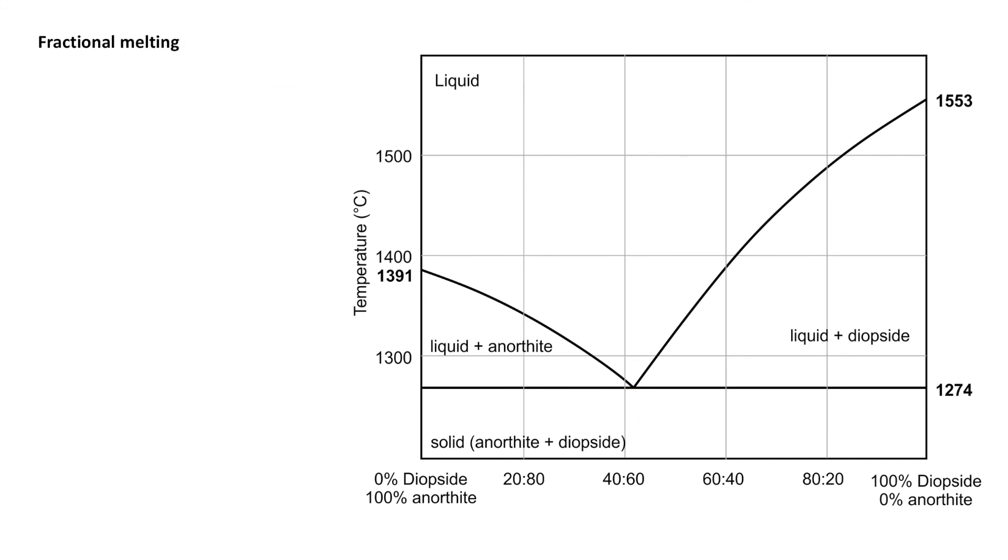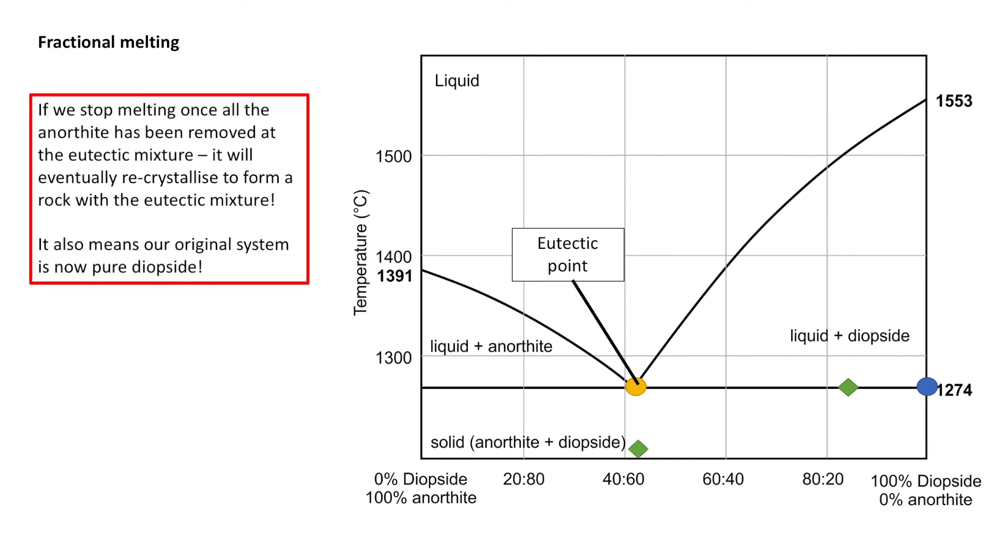Let's look at an example of fractional melting. Now this is not something we've looked at before, but if we envisage a system that's at this point, heat it up, it's going to hit the solidus and we're going to start melting a eutectic mixture at the eutectic point. So 43% diopside, 57% anorthite, something like that. And we're going to continue to melt at this point until all the anorthite is consumed because we're on the diopside side of the eutectic point. What if once we remove all that anorthite, that we remove that melt from the system? Well, that's going to generate a rock of eutectic mixture.